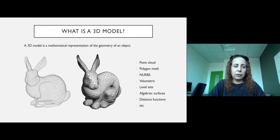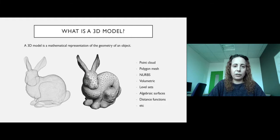What is a 3D model? A 3D model is a mathematical representation of the geometry of an object. This mathematical representation can be in the form of point clouds, polygon meshes, NURBS, or volumetric forms, or in many different forms like level sets, algebraic surfaces, distance functions, etc.